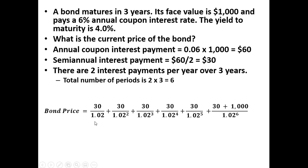Now let me talk about the denominator — this $1.02 — where is that coming from? It equals one plus the yield to maturity divided by two, since we have semi-annual payments. The yield to maturity divided by two is 2%, because 4% divided by two is 2%, or 0.02. So one plus half the yield to maturity gives us 1.02 in the denominator.